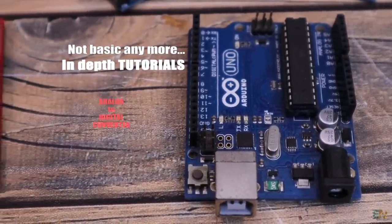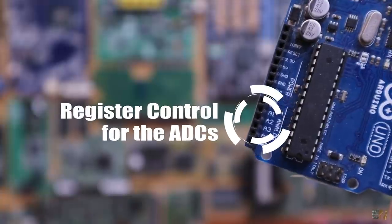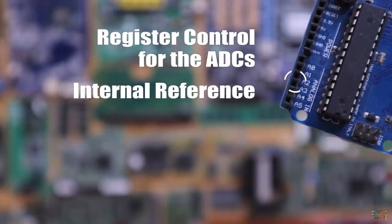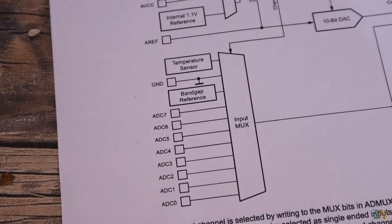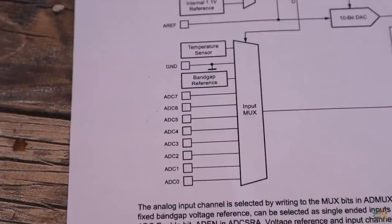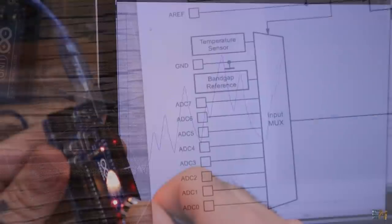And today we will learn about all the blocks of the analog to digital converter or ADC, what registers we need to work with, how to define the analog reference, the sample rate prescaler, select the inputs with a multiplexer, and quite interesting, how to read the internal temperature sensor. Because yes, the Arduino has an internal temperature sensor.